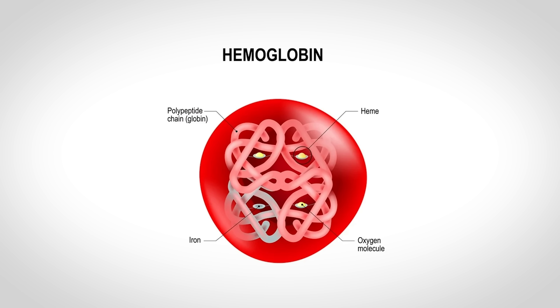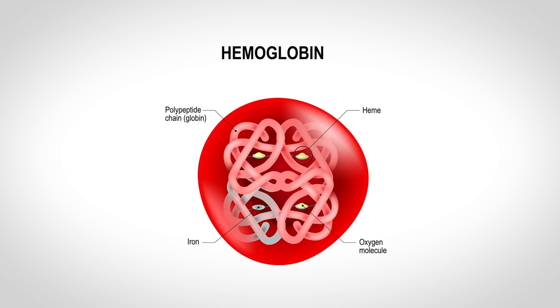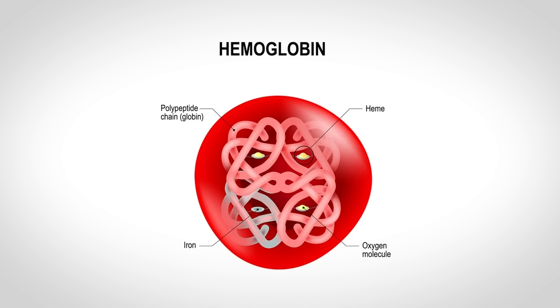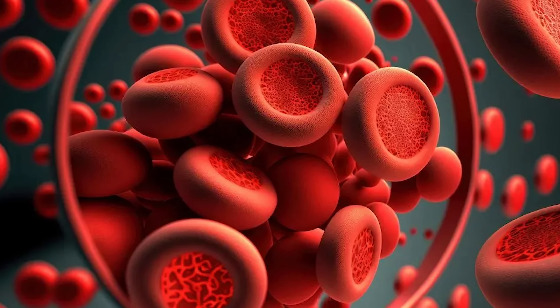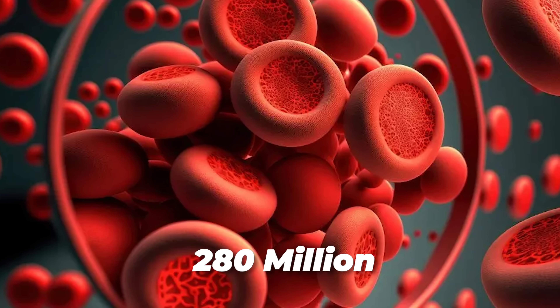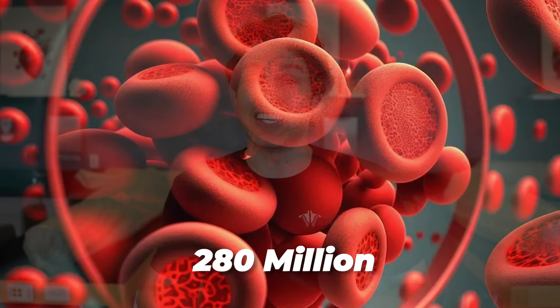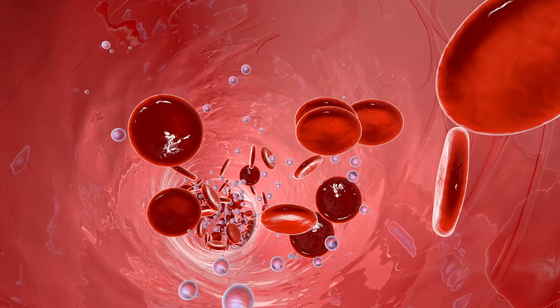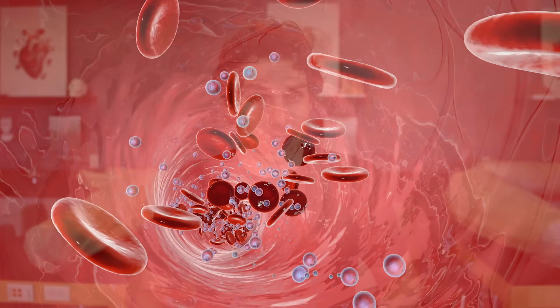And if you still aren't impressed by your red blood cells, let's mention hemoglobin. Hemoglobin is an oxygen-carrying protein and a pigment that gives blood its red color. Every red blood cell contains about 280 million molecules of hemoglobin, and each hemoglobin molecule can carry up to four oxygen molecules — so that means each red blood cell could carry over a billion oxygen molecules.